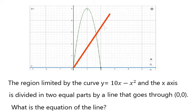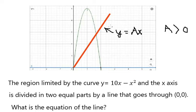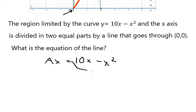We know that the red line should be y equals Ax, and we see that this line is sloped upward, which means capital A should be greater than 0. Now we have the curve, so we need to find the intersection points. We set Ax equal to 10x minus x squared.